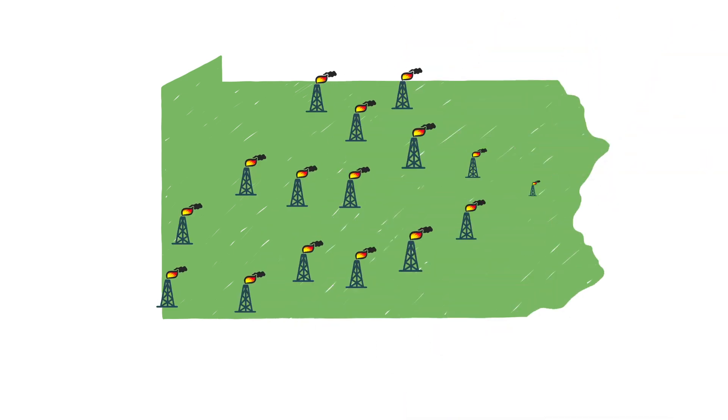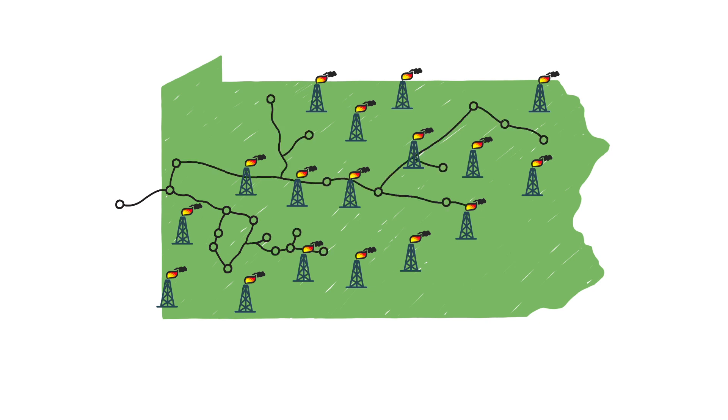Development of a hydrogen hub would not only greatly increase fracking, it would also require the construction of thousands of miles of pipelines to transport and bury carbon underground.